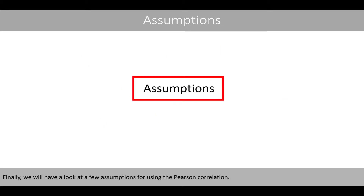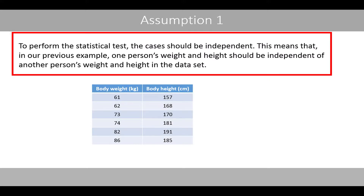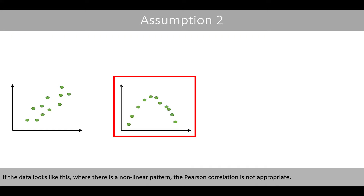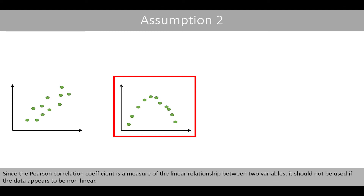Finally, we will have a look at a few assumptions for using the Pearson correlation. To perform the statistical test, the cases should be independent. This means that in our previous example, one person's weight and height should be independent of another person's weight and height in the dataset. The second assumption is that the scatter of the data should be linear. If the data shows a nonlinear pattern, the Pearson correlation is not appropriate, since it is a measure of the linear relationship between two variables.